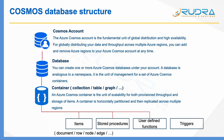Within a database, you can have a container. An Azure Cosmos container is a unit of scalability for both provisioned throughput and storage of items. A container can be called a collection, table, or graph based on the database type you're using, whether it is MongoDB or other similar databases. The container is the level where you can provision throughput. However, you can also provision throughput at the database level, but when you do that, all containers within the database share the resources. If you have containers with different throughput requirements, then provision throughput at the container level.